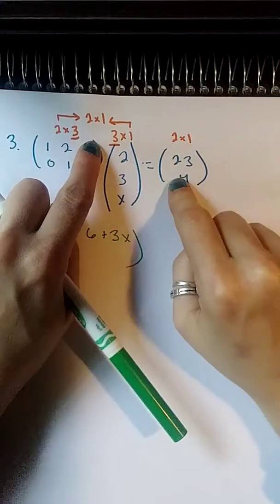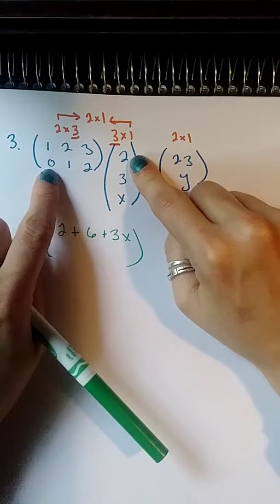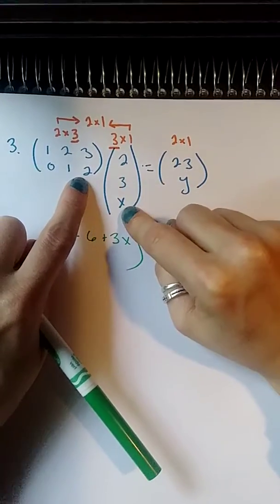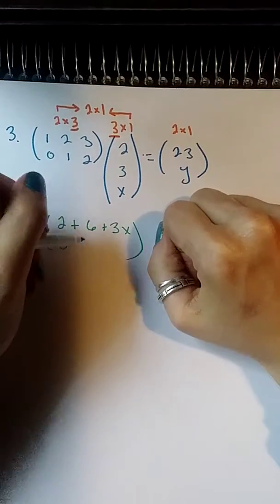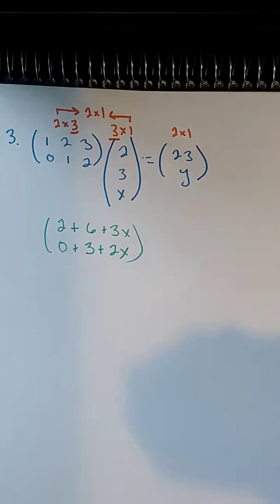Now, I'm out of columns here, so I'm going to move on to my next row and begin my column again. 0 times 2 plus 1 times 3 plus 2 times x. So 0 times 2 is 0, 1 times 3 is 3, 2 times x is 2x. I don't know what that is.